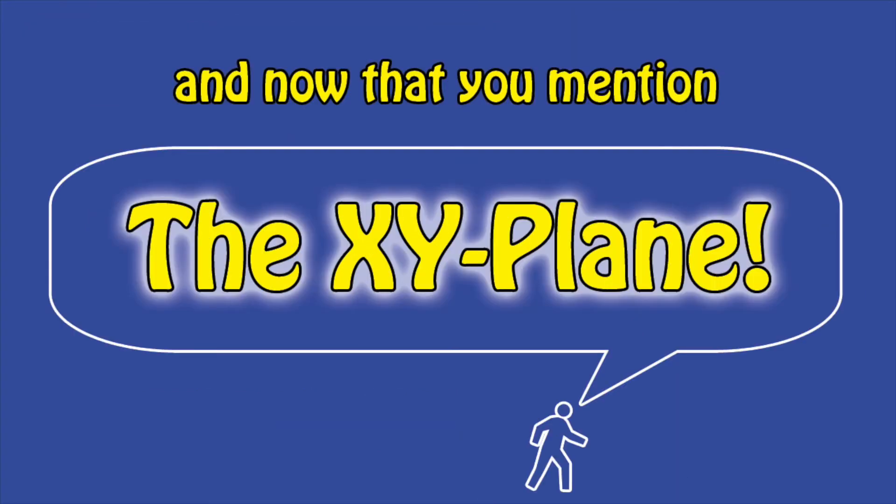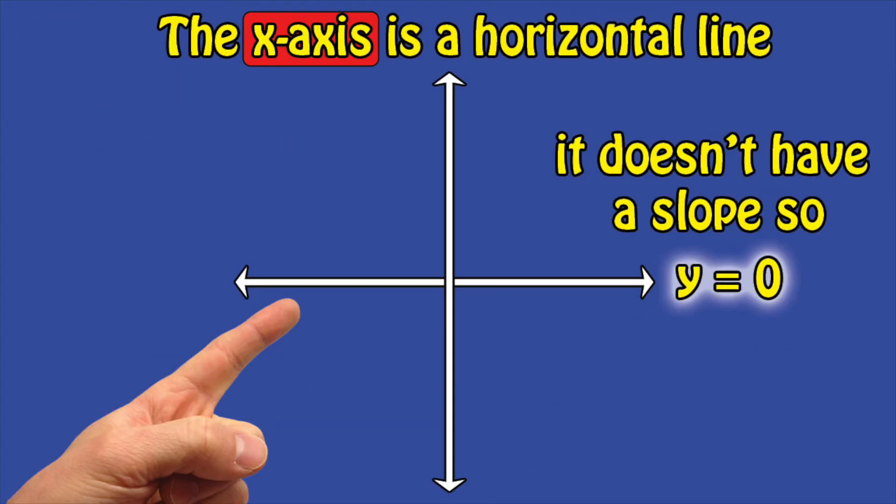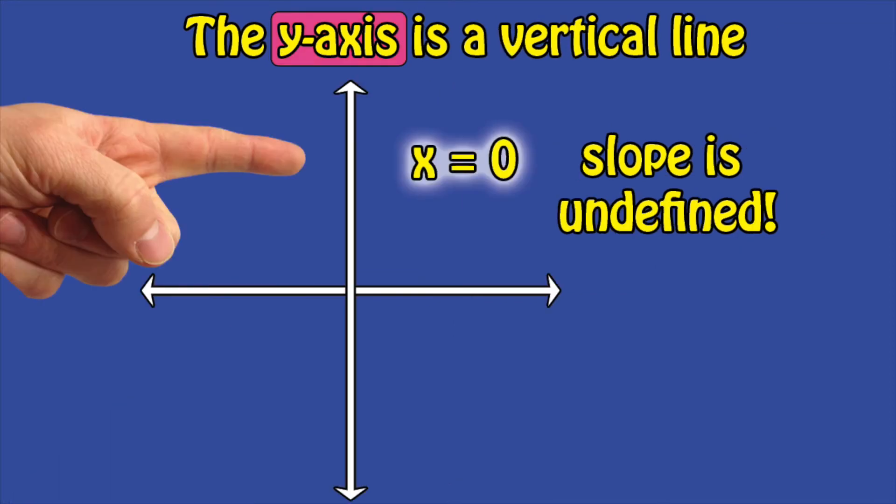And now that you mention the x-y plane. The x-axis is a horizontal line, it doesn't have a slope so y equals 0. The y-axis is a vertical line, x equals 0, slope is undefined.